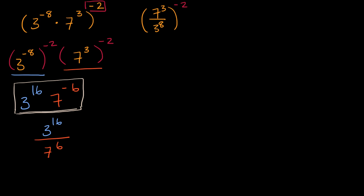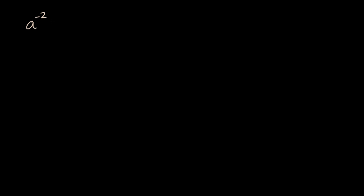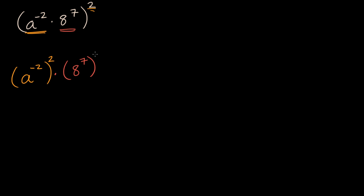Let's do another one of these. Let's say that we have a to the negative two times eight to the seventh power, and we want to raise all of that to the second power. Like before, I can raise each of these things to the second power. So this is the same thing as a to the negative two to the second power, times eight to the seventh to the second power. Negative two times two is negative four, so that's a to the negative four, times eight to the seven times two, which is 14 — eight to the fourteenth power.